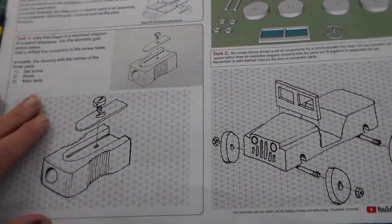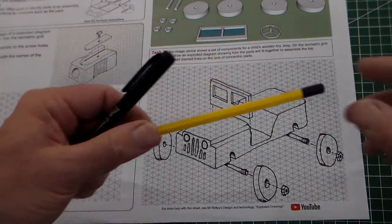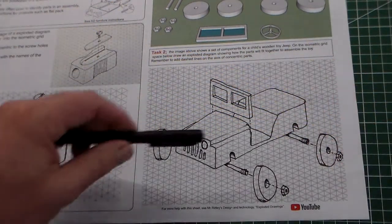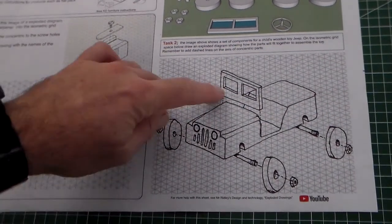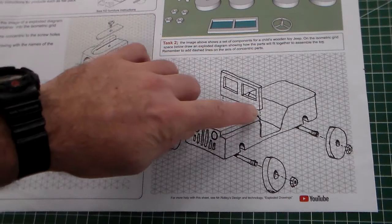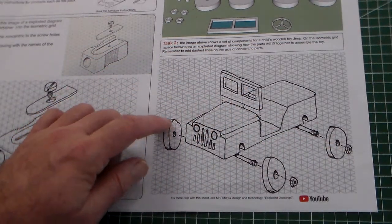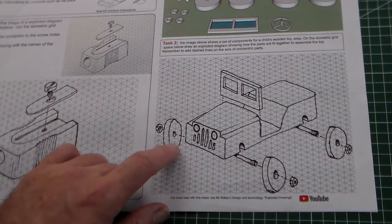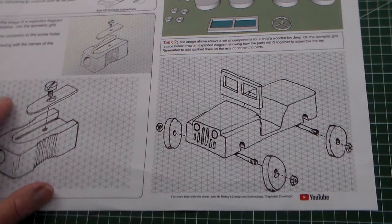If we look at my completed one there, you can see again I've started drawing it with a pencil and then I've gone over it with a fine liner. You can see that I've added the dot and dash lines here to indicate where the screen might fit and I've added the wheels and wheel nuts there.